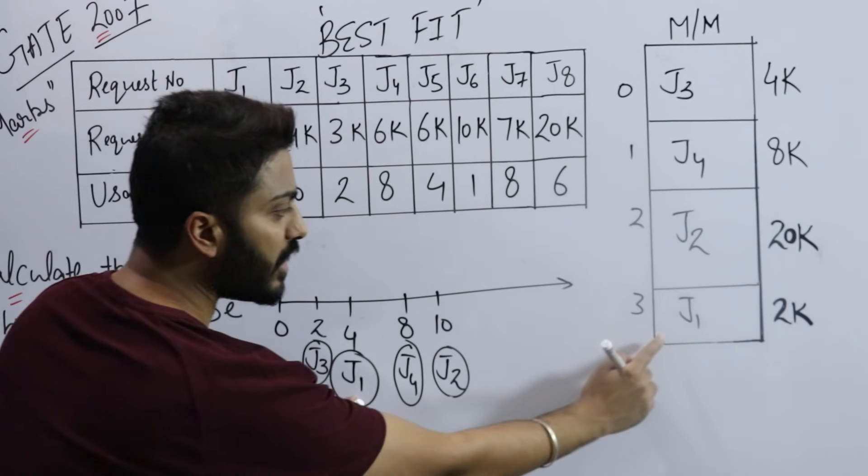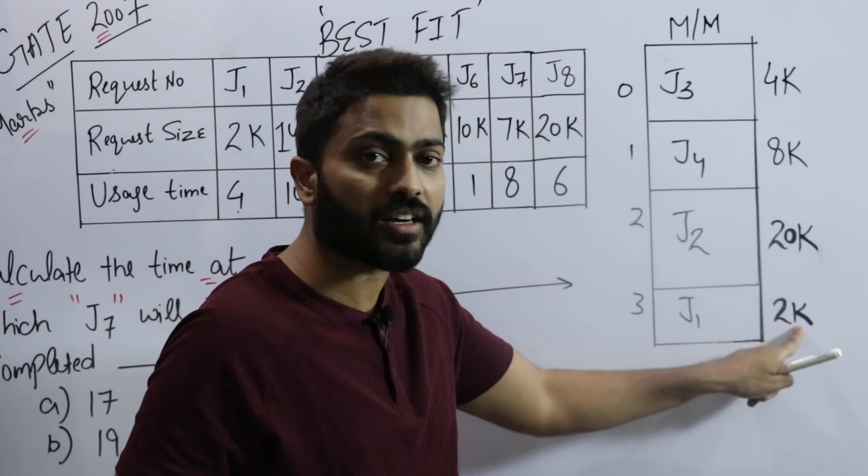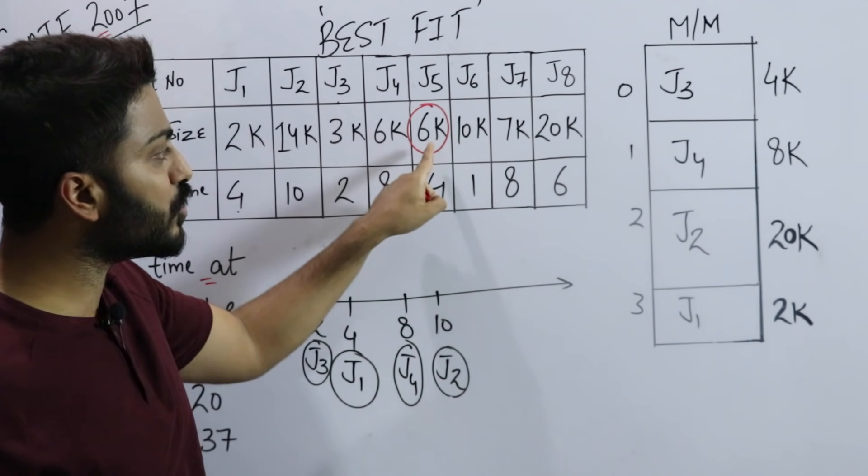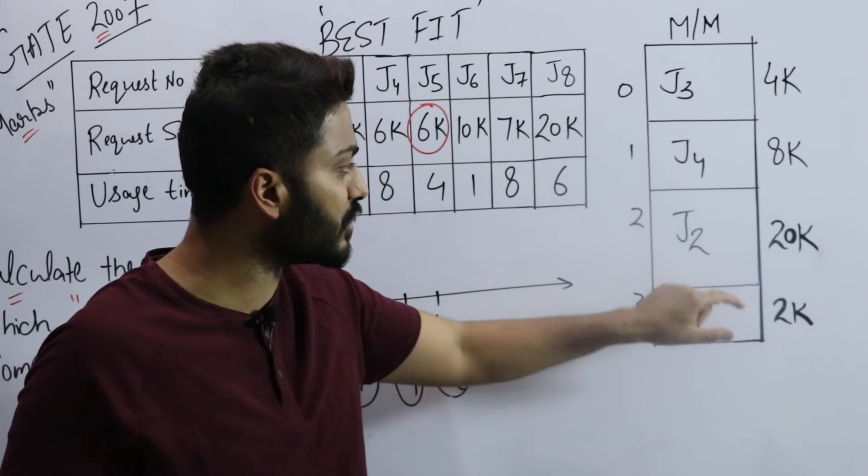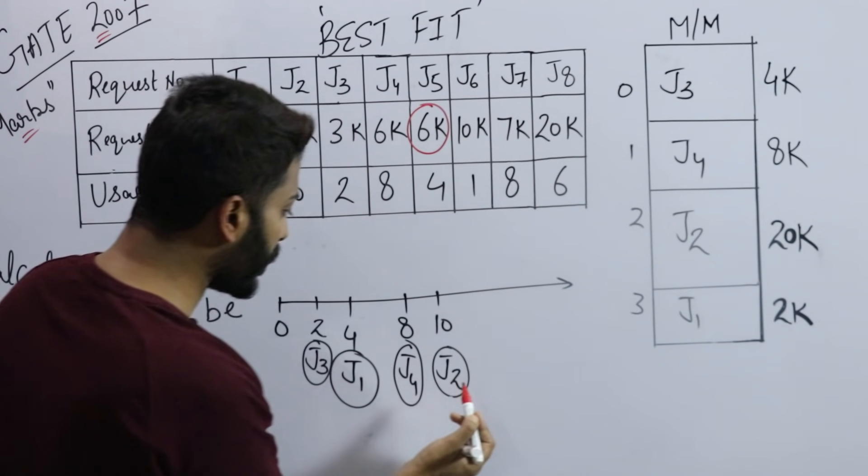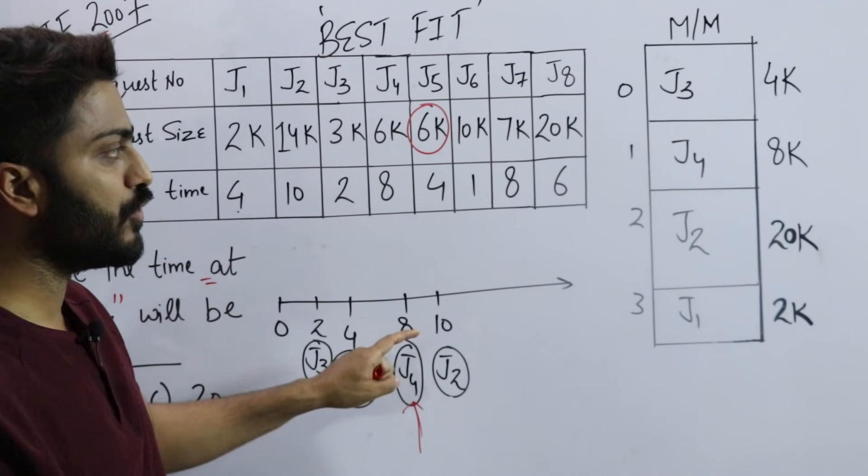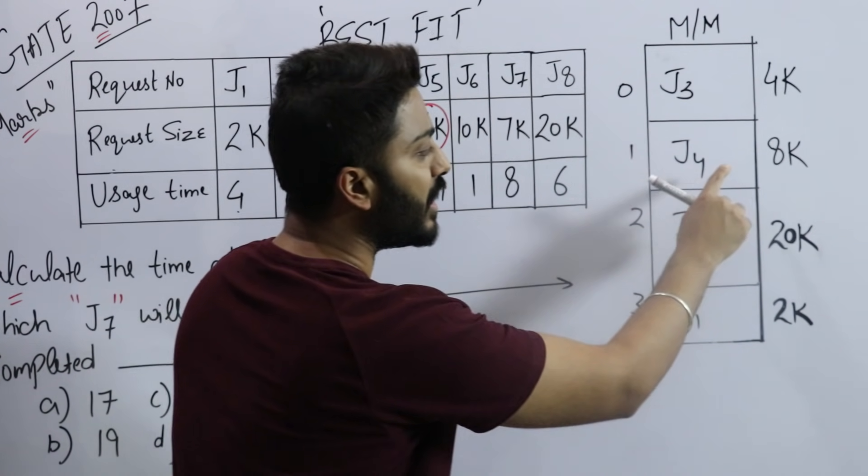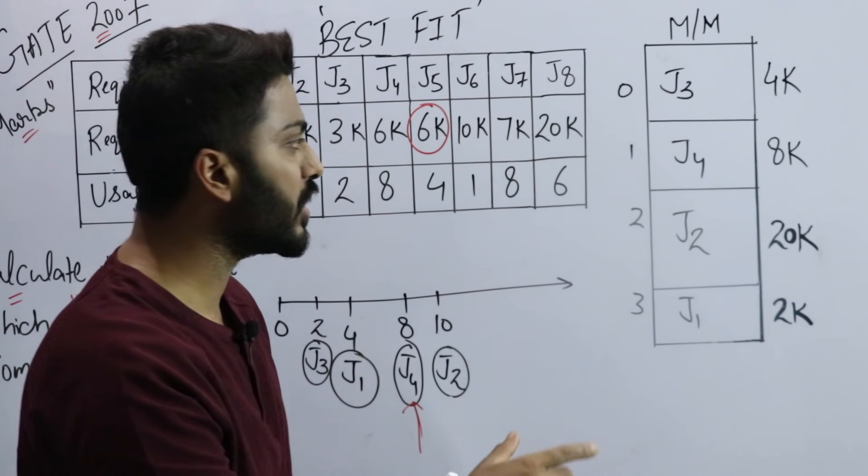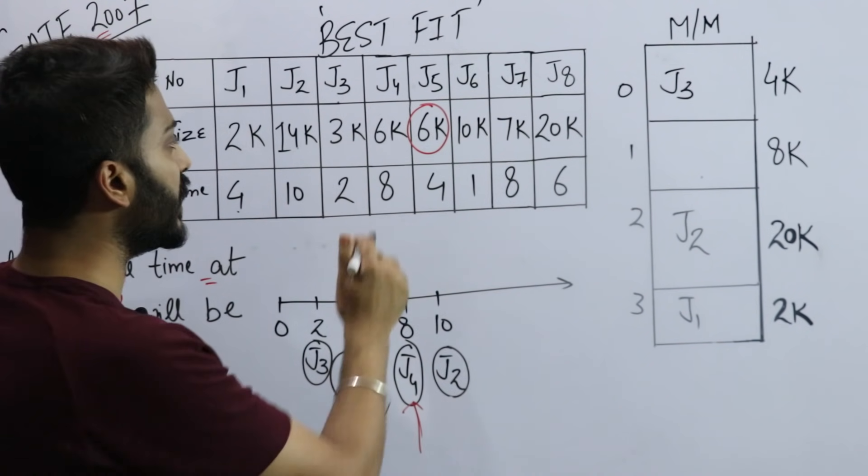So even when time reaches 2 and J3 exits, I cannot place J5 there. The problem is the size is 6k. Then let's check at time 4. When time is 4, J1 will exit. J1 was in the 2k slot, but the process size is 6k, so I cannot fit it there either. So J5 can only fit in one of these two larger slots. Which one will finish first - J4 or J2? J4 will complete at time 8.